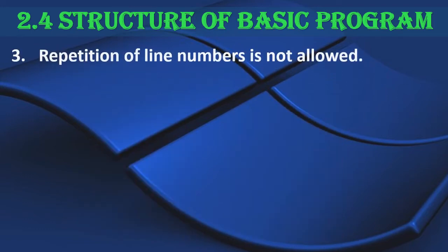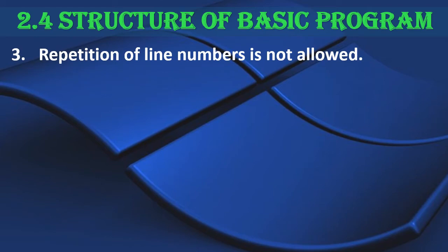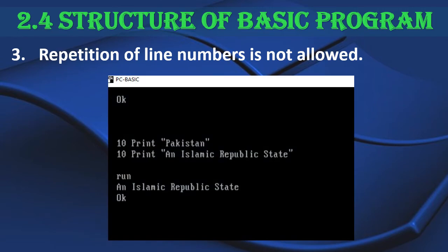The third rule is that repetition of line numbers is not allowed. This should be on your fingertips. In the example, I have written a program with only two lines and both have the same line number. In the output, you can see the second line has replaced the first one because of the duplicate line number.